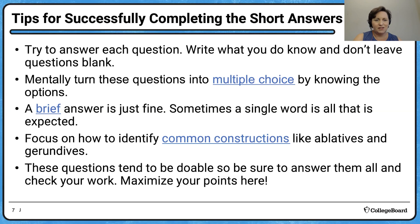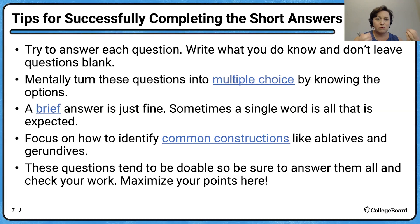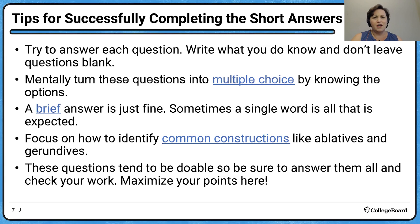Don't leave anything blank. The best thing you can do is mentally turn these questions into multiple choice. If it asks about case, know your seven options: nominative, genitive, dative, accusative, ablative, locative, vocative. If it asks for a mood, know that the options are indicative, imperative, and subjunctive. Make yourself lists of things like that. We'll be going through some characteristic questions — make yourself lists today if you don't know the grammatical terminology.